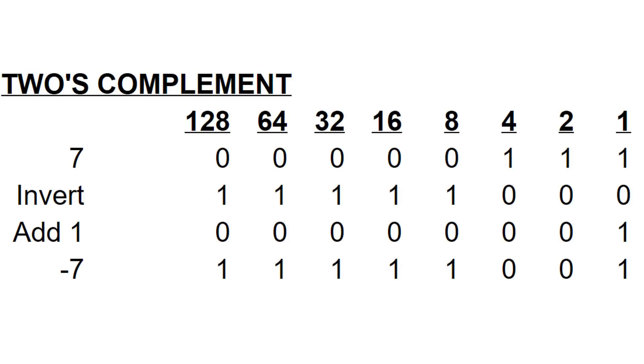One way to do it is to use a sign, just like we have the minus sign in front of a number. You could use one bit — the very leftmost bit — to determine whether the number is positive or negative. So if it's zero, it's a positive number, and if it's one, it's a negative number. But there's actually another clever system called two's complement, and two's complement allows you to add positive numbers and negative numbers together and get the right answer.